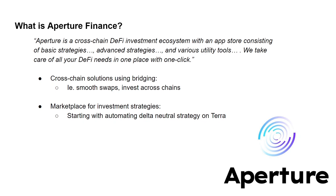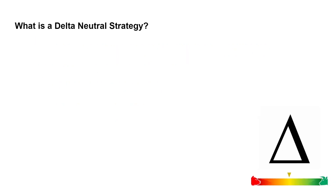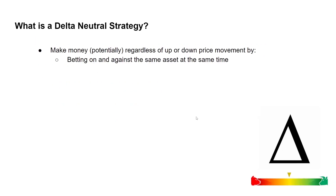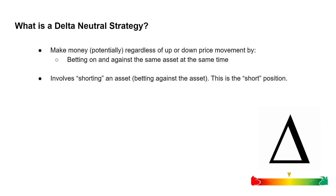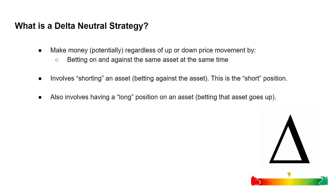What exactly is a delta-neutral strategy? In plain and simple terms, it's a strategy that makes money — potentially — regardless of upward or downward price movement of some underlying asset. That can be done by having positions that bet on and against the same asset at the same time. In a delta-neutral strategy, there is always some asset that you are short on — meaning betting against it, called the short position — and also some sort of long position, meaning you're betting the asset goes up in price.